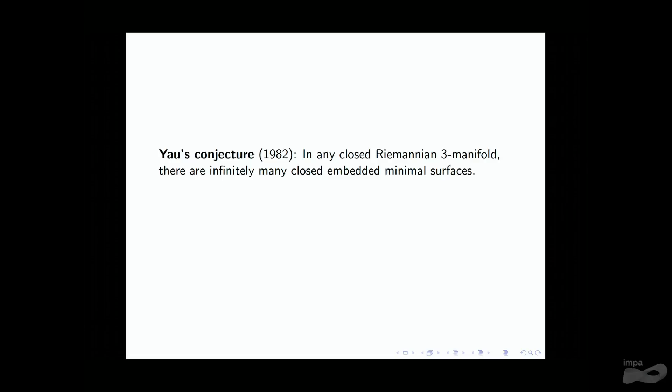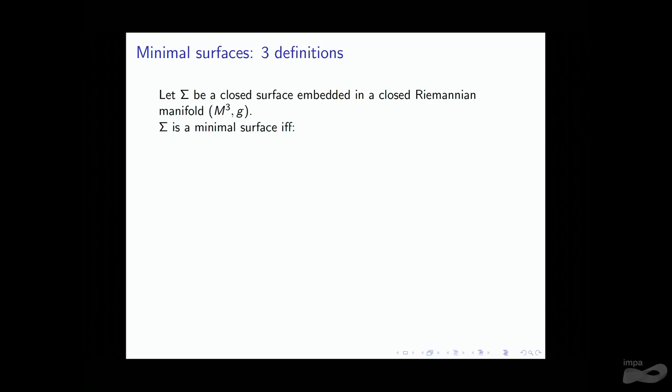The guiding question of this talk is the conjecture of Yao. It says that in any closed Riemannian three-manifold, there should be infinitely many minimal surfaces. The key word here is minimal surfaces — let me first define what this is. You start with a closed surface embedded in a three-manifold. Sigma is a minimal surface if and only if it satisfies one of three equivalent conditions.